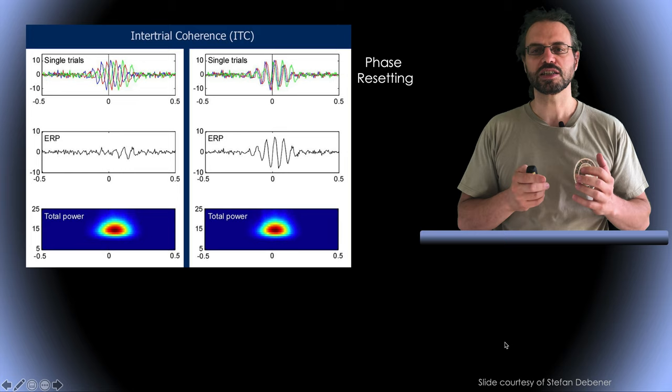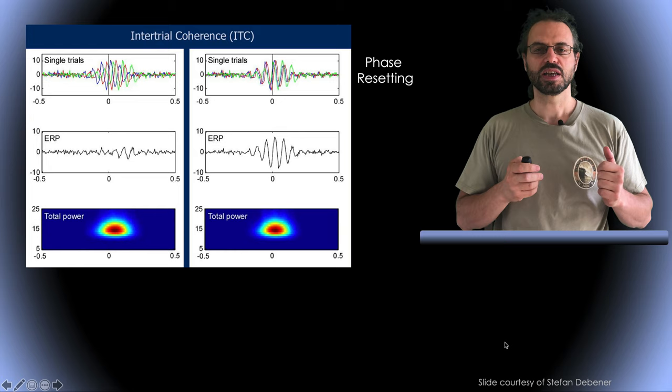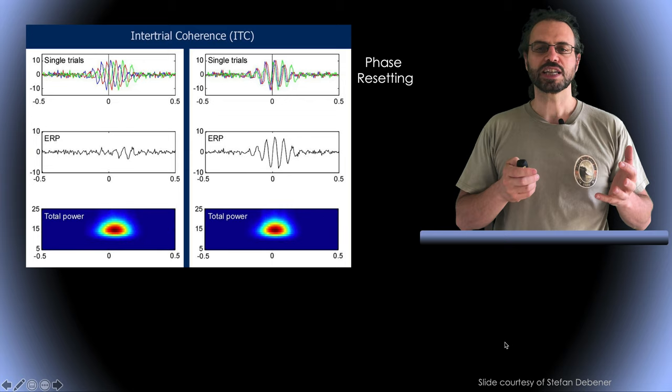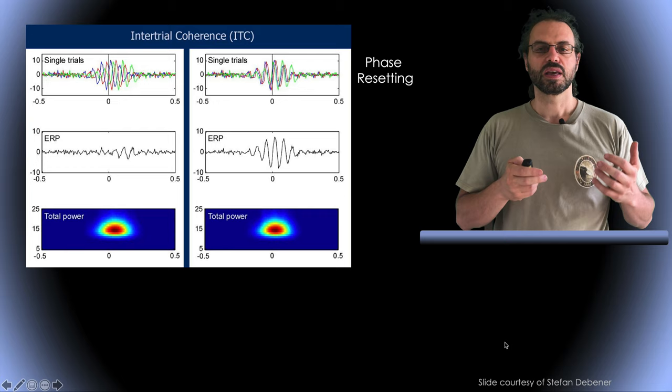It is important to note that the spectral power is identical or almost identical because spectral power simply looks at the average oscillation amplitude. This amplitude is independent of the phase of the signal in single trials. Since power cannot provide us with information about the synchronization of the trials, what can we do?